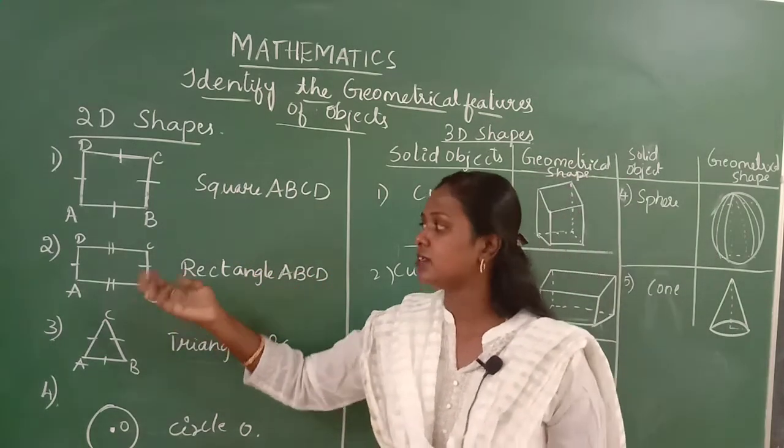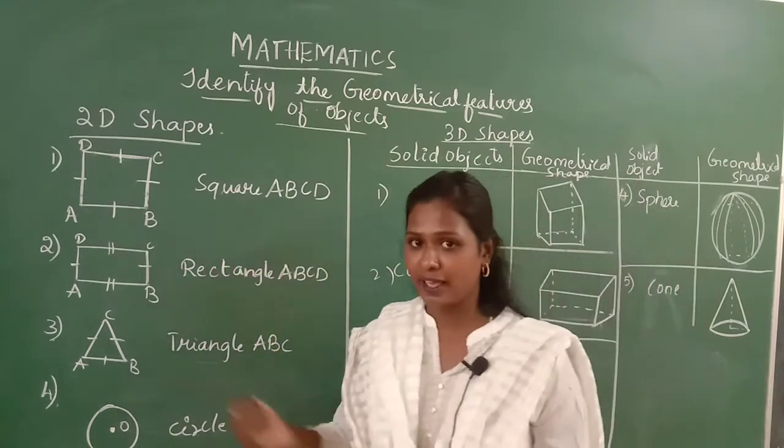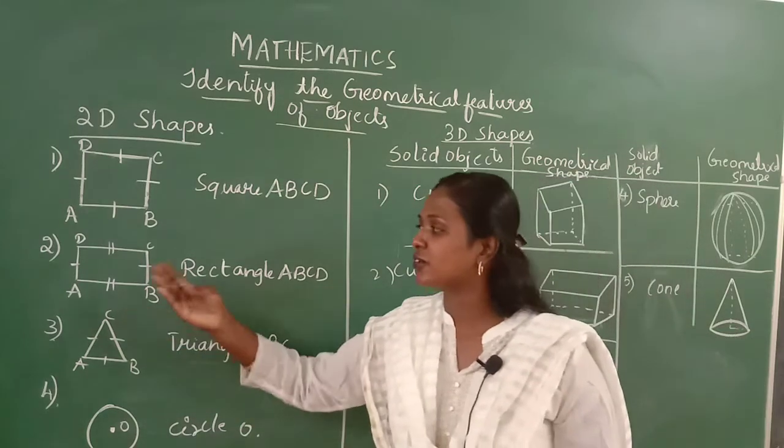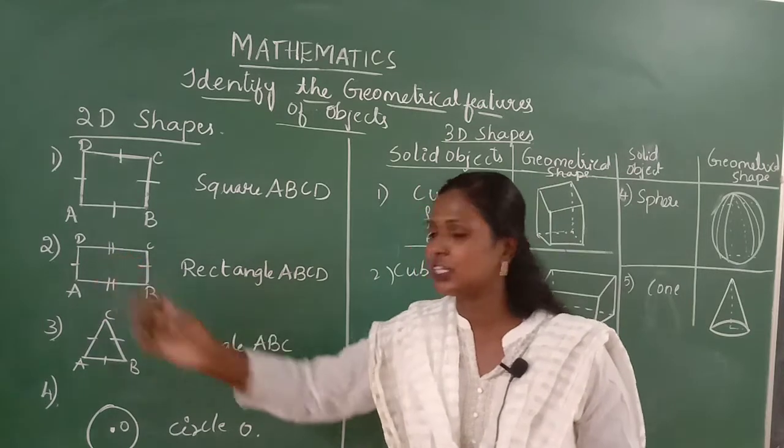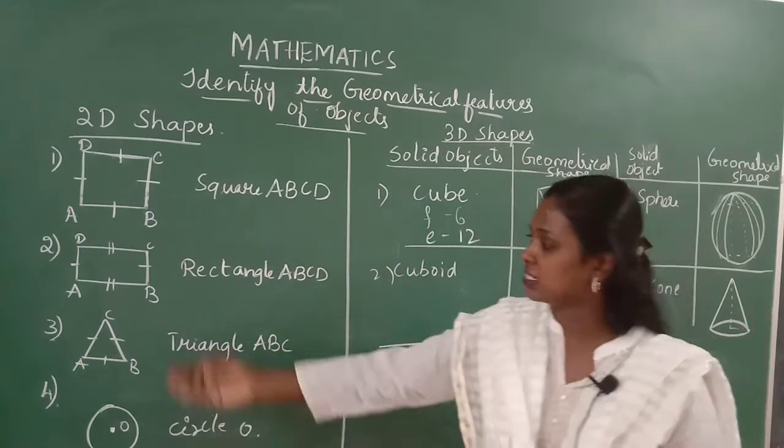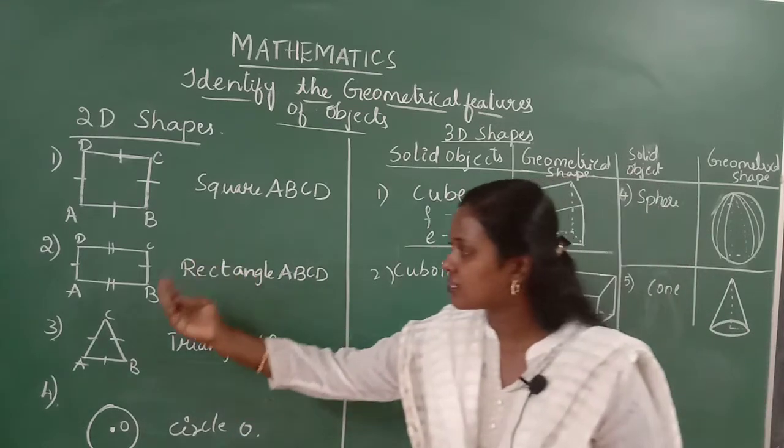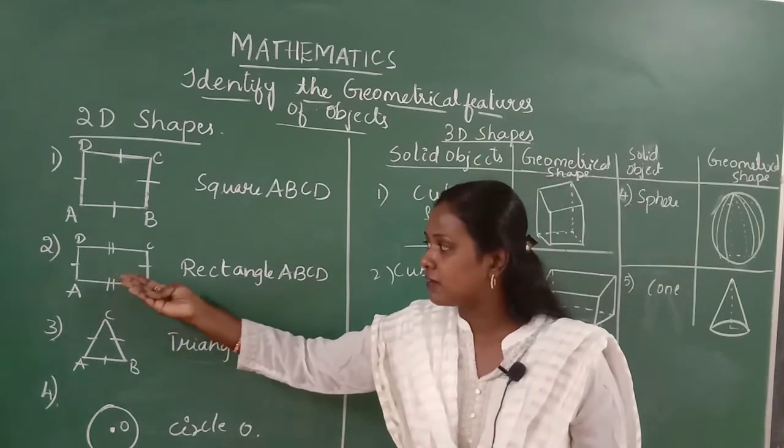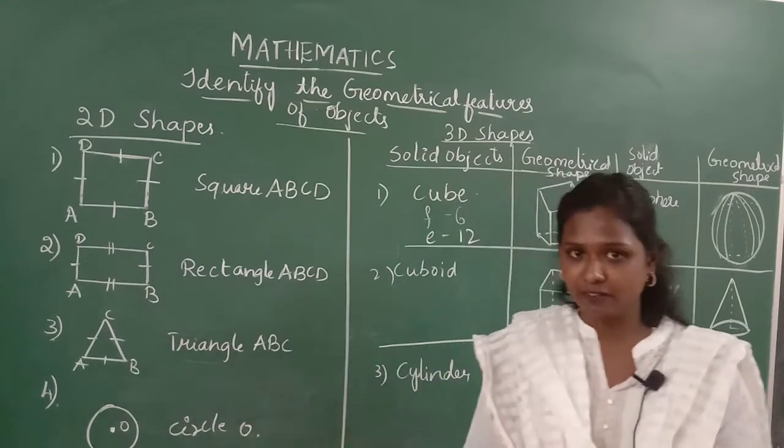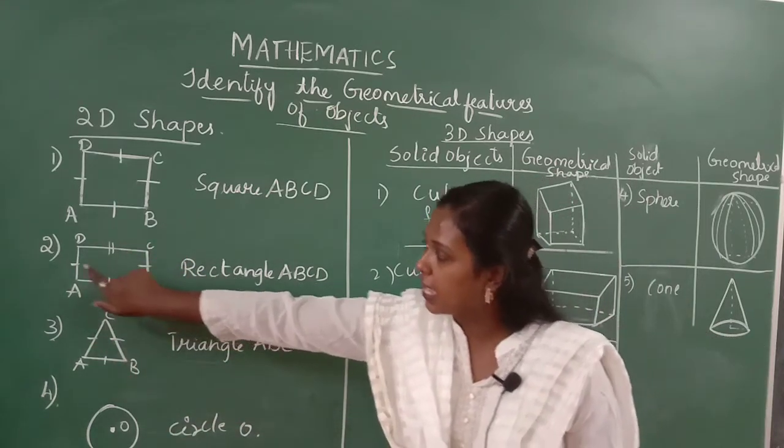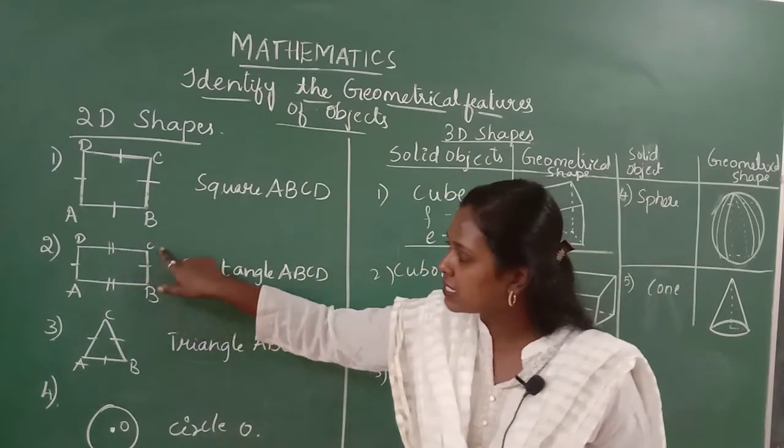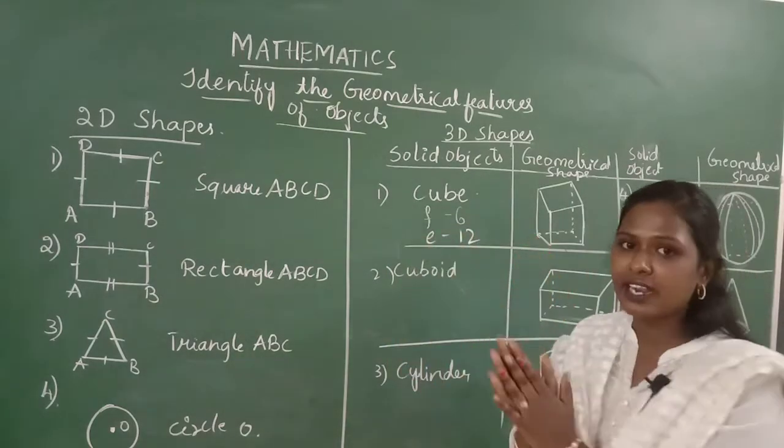Let us move to the next example. This is a rectangle which has a quality similar to the square. Rectangle also has 4 corners. A, B, C, D are the 4 corners of a given rectangle. You can mention any other English alphabets for the given figure. We call the given figure as rectangle ABCD. And the opposite sides of a rectangle are equal. Not all the sides. The opposite sides of a rectangle are equal. For example, AB and DC are equal. BC and AD are equal.